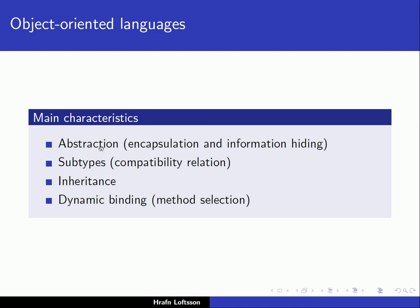If you look up the main characteristics of object-oriented languages online, you often find only three items mentioned: abstraction, inheritance, and dynamic binding. So it's often the case that subtypes are not mentioned explicitly, and that's not really a surprise because subtypes and inheritance, even though being totally different concepts, are often achieved by using a single mechanism in object-oriented languages — namely the concept of subclass.